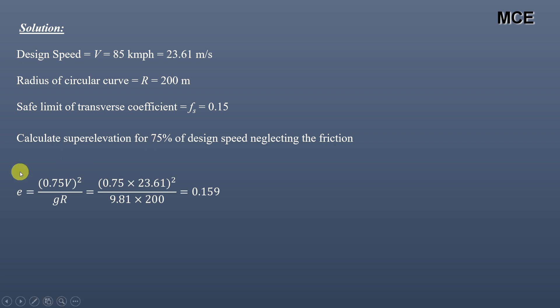The super elevation for 75% of the design speed is given as (0.75V)² divided by G×R. So it will be (0.75 × 23.61)² divided by 9.81 × 200, which gives 0.159.